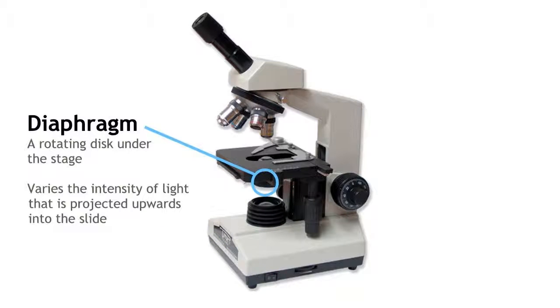The diaphragm is a rotating disc found under the stage. It varies the light intensity that is projected upwards into the slide.